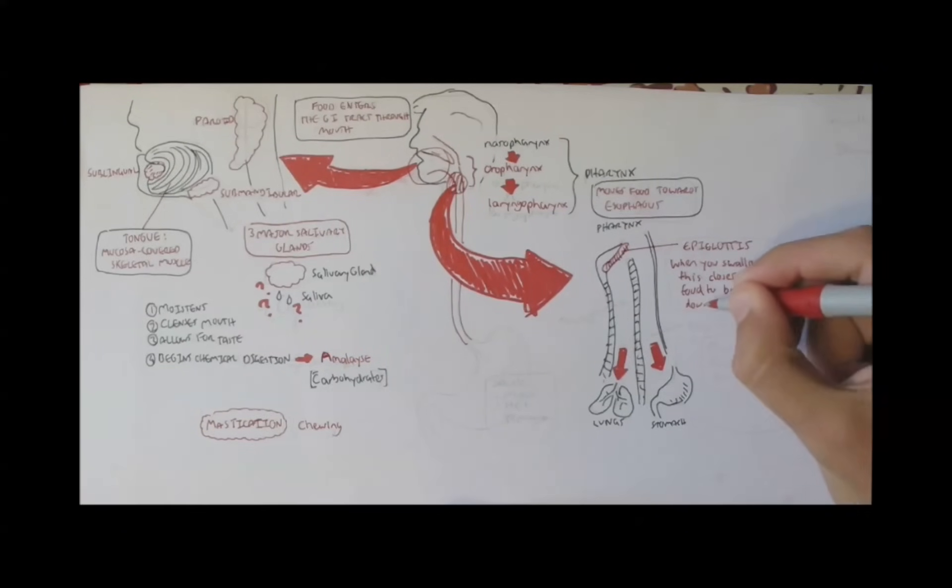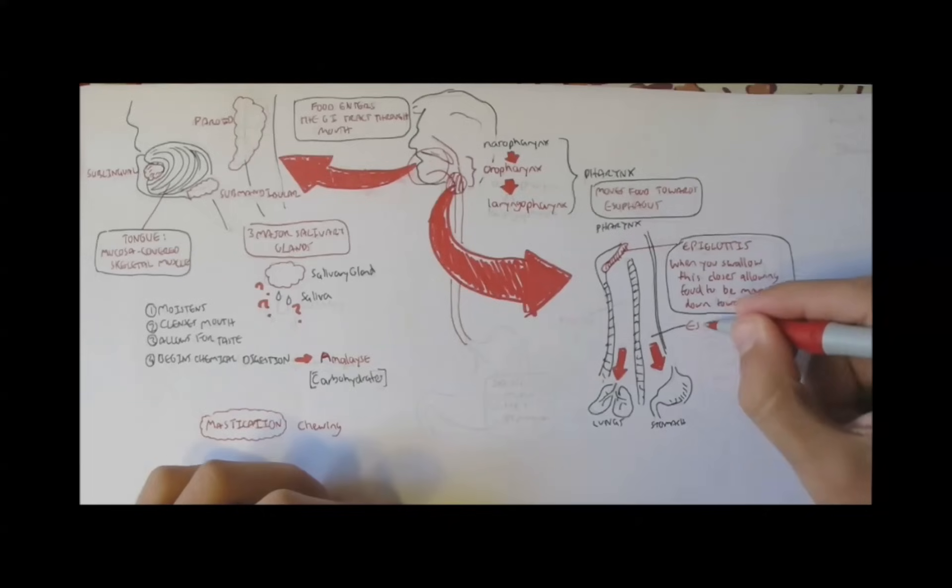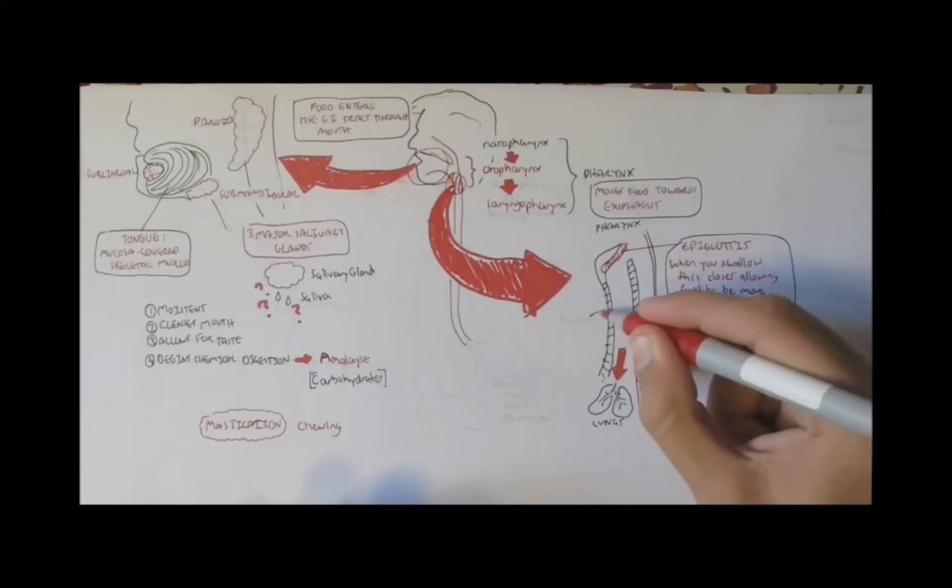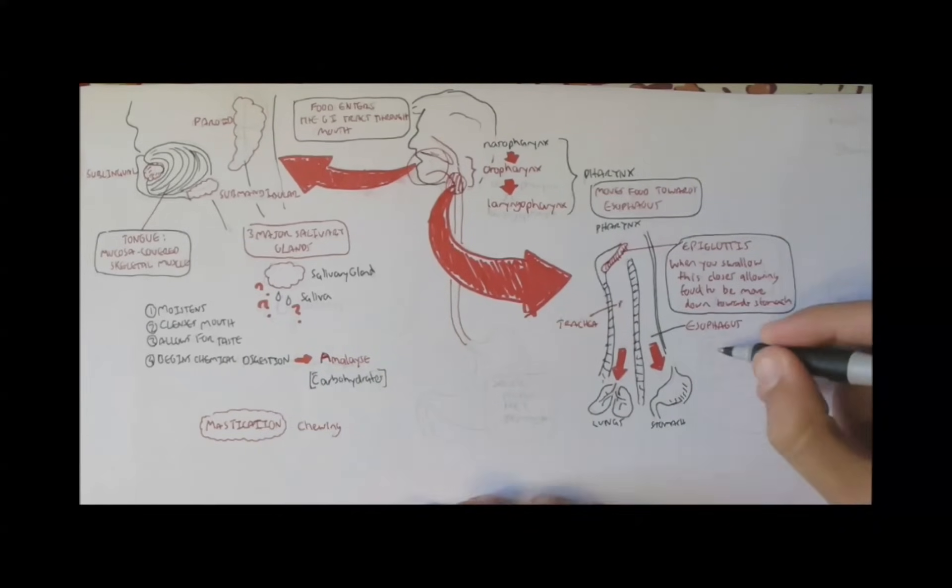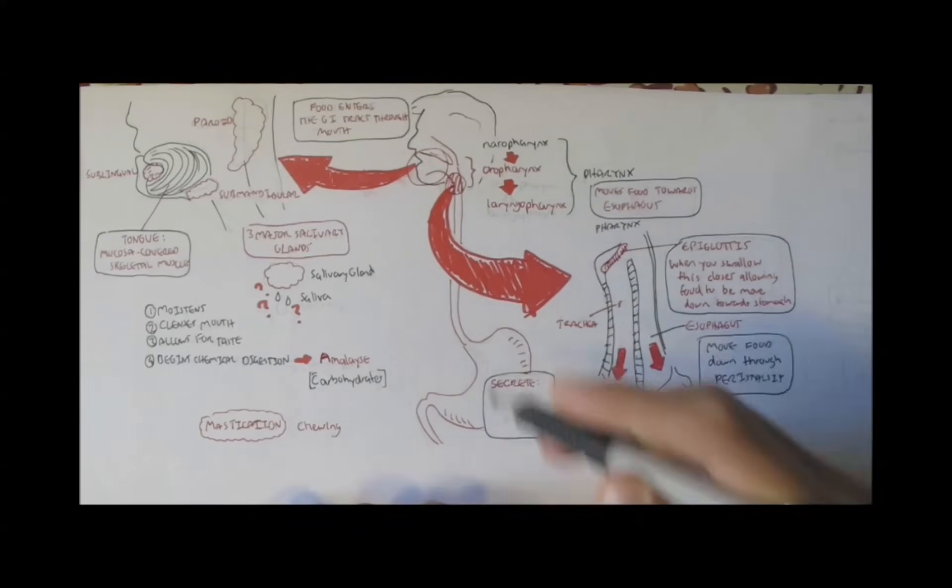And so the act of swallowing, or deglutination, involves the epiglottis closing, allowing the food, now referred to as the bolus, to go down towards the esophagus. And the bolus moves through the esophagus through a process called peristalsis. And the bolus moves and arrives in the stomach.